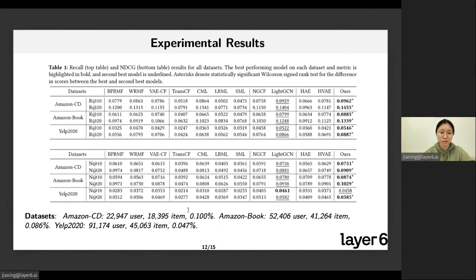We compare with a number of baselines from classic matrix factorization and BPR Bayesian personalized ranking to the most recent metric learning approaches: translational collaborative filtering, collaborative metric learning, latent regularized metric learning, symmetric metric learning, to graph-based approaches: neural graph collaborative filtering and LightGCN,